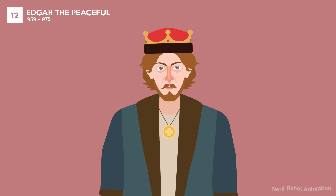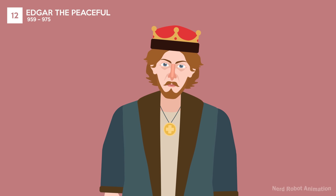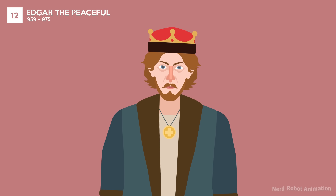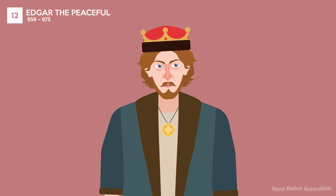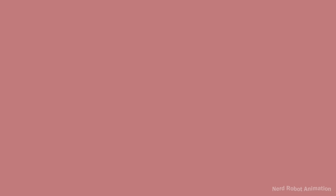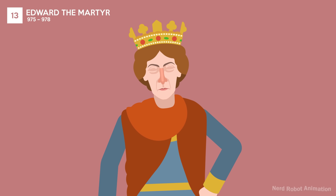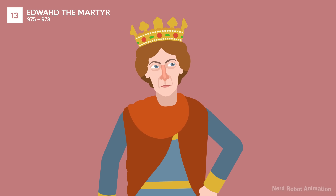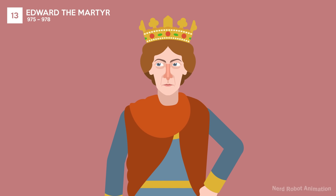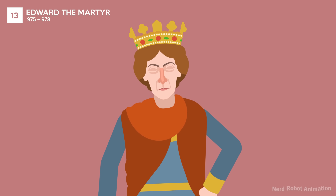Edgar the Peaceful's reign was known for its stability and peace, earning him his moniker. He was also crowned in a grand ceremony that set a precedent for future coronations. Edward the Martyr's short reign ended abruptly when he was murdered, possibly on the orders of his stepmother. His death led to his canonization as a martyr.